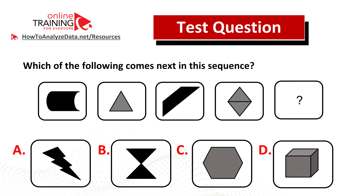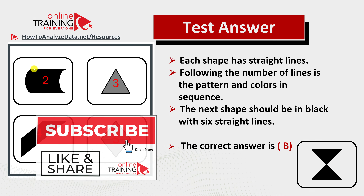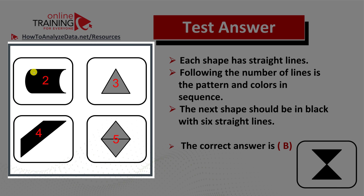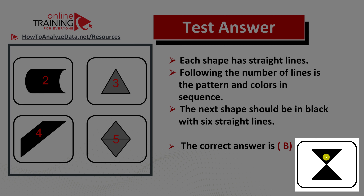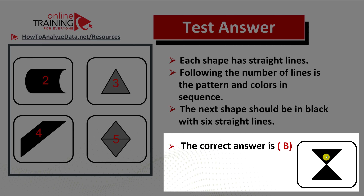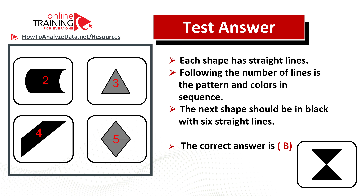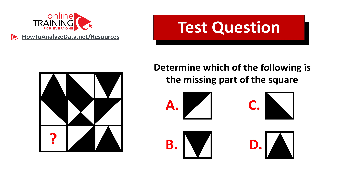In addition to the changing color pattern, there is also a pattern of straight lines. Shape one has two straight lines, the triangle has three, the next shape has four, the following has five — so our next shape should be black and have six straight lines. The correct choice is choice B, sand clock. Hopefully you've nailed this question, or if not, you've learned how to answer similar questions on the test.